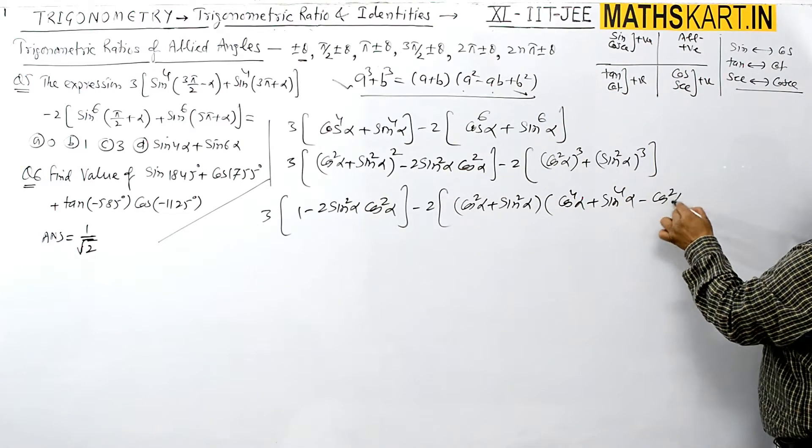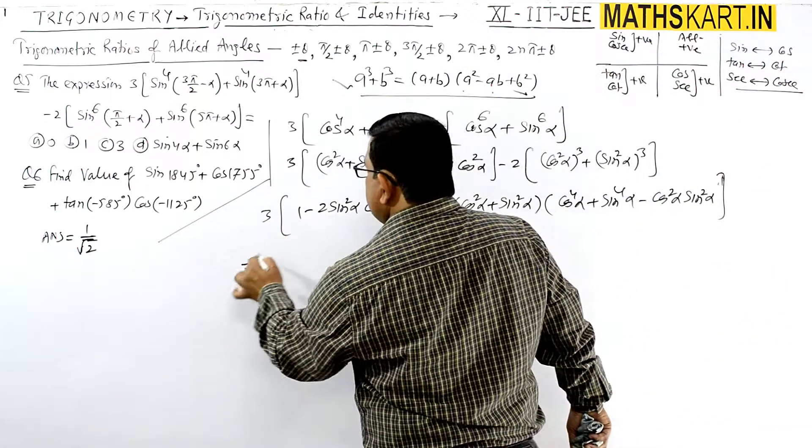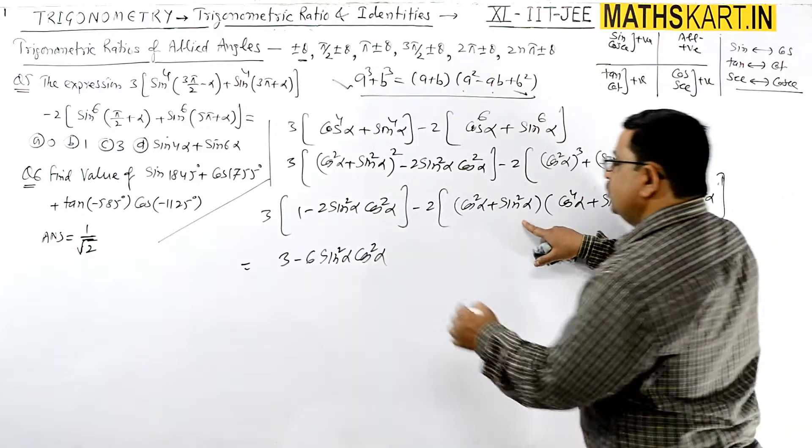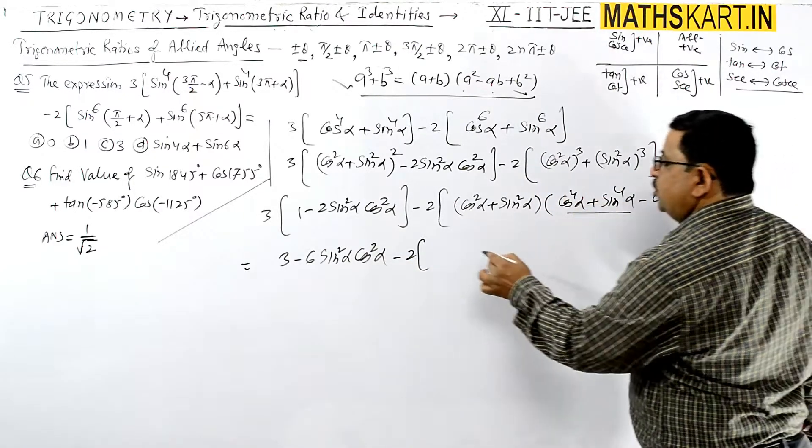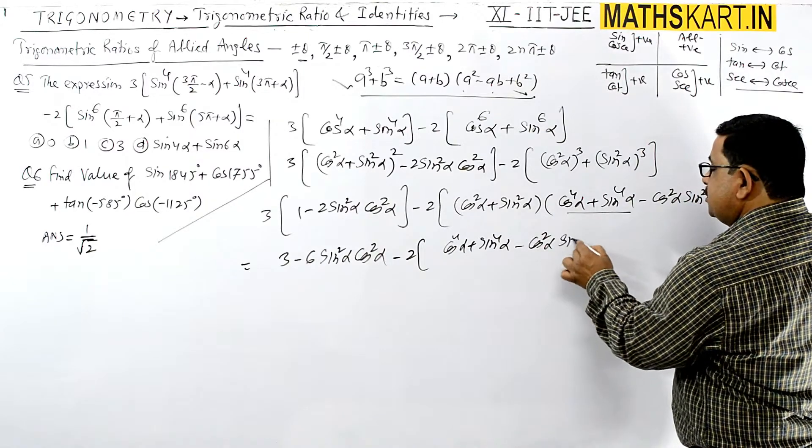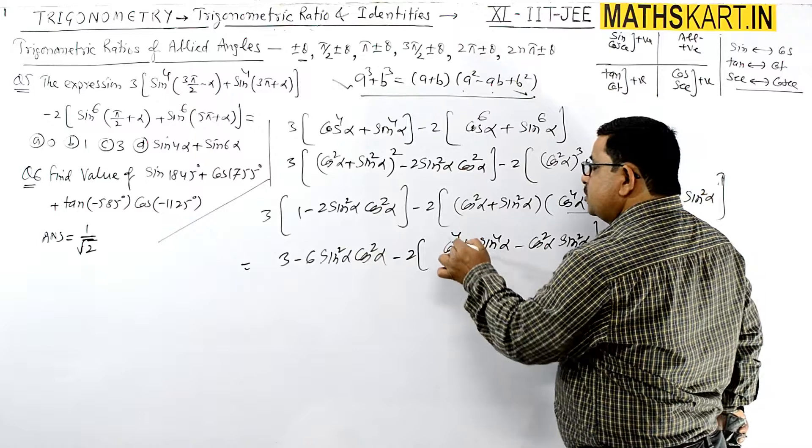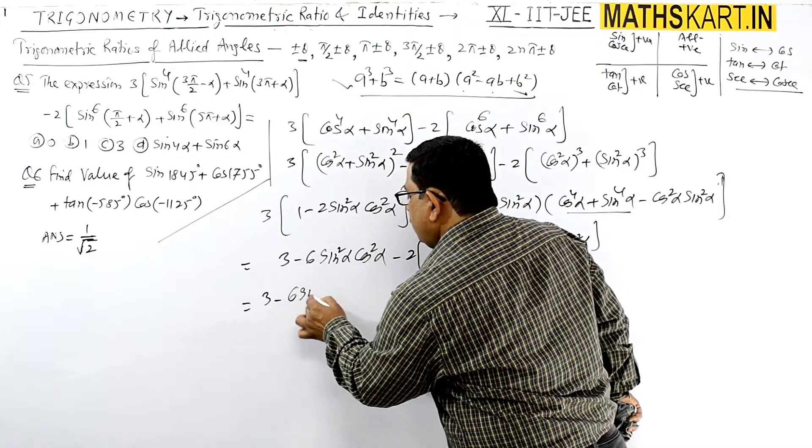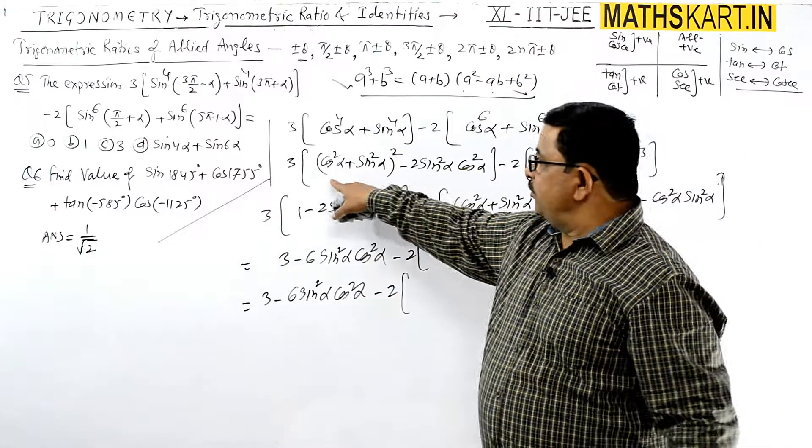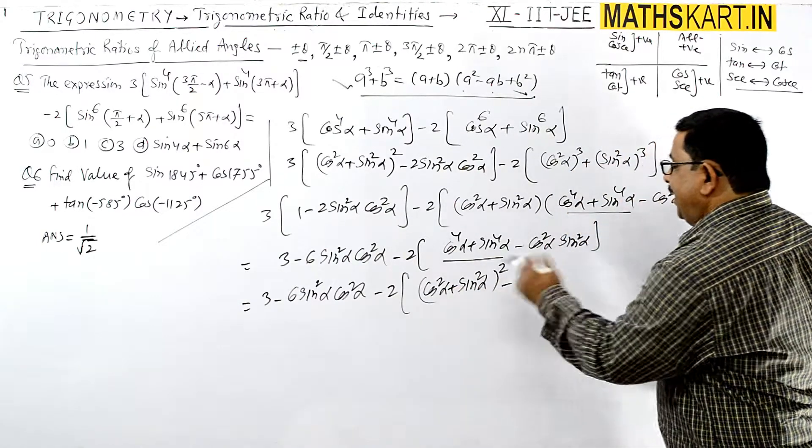Minus ab, so minus cos^2 α sin^2 α. Now just open this. This is 3 minus 6 times sin^2 α cos^2 α, and you get 1. Again minus 2 times of again we are getting the same cos^4 α plus sin^4 α minus cos^2 α and sin^2 α. Again you can write the whole square, the same value we wrote earlier. (cos^2 α + sin^2 α)^2 minus 2 times.